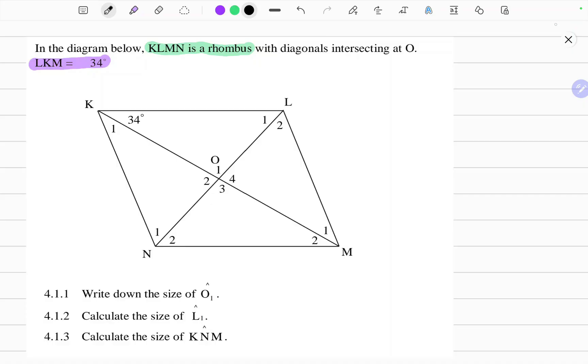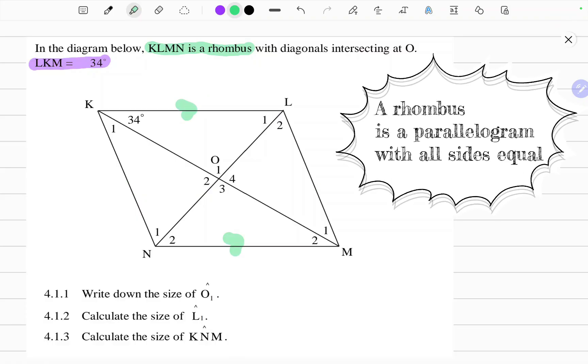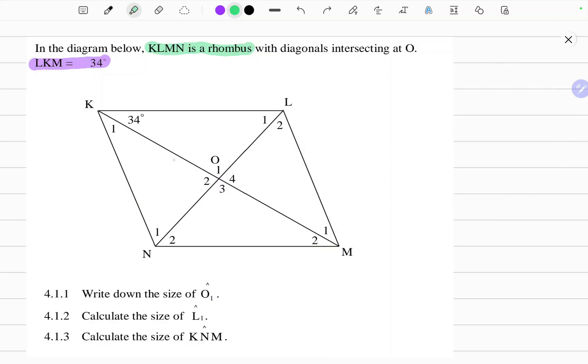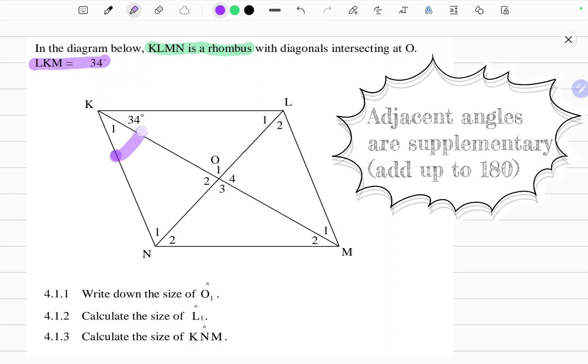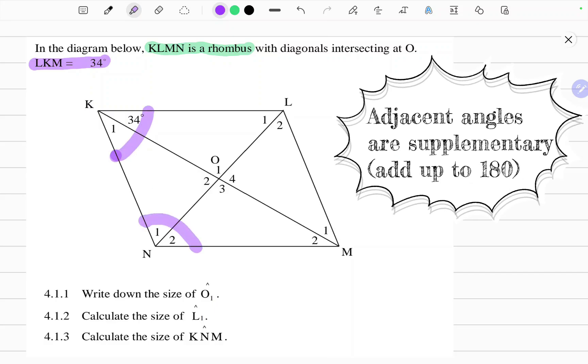Before we answer the questions I want to go over the properties of a rhombus. The properties of a rhombus are all four sides are equal in length, two pairs of opposite sides are parallel, diagonals bisect each other at 90 degrees, opposite angles are equal, and adjacent angles add up to 180 degrees.